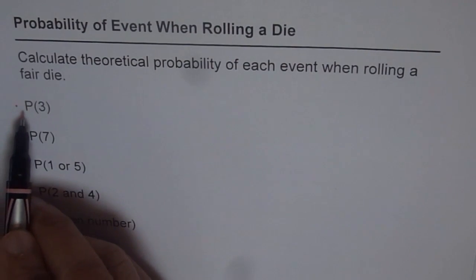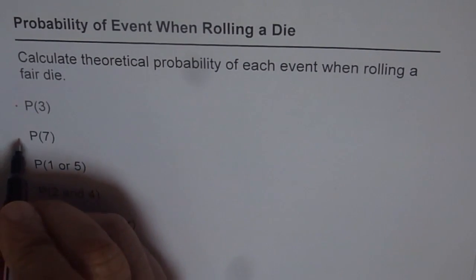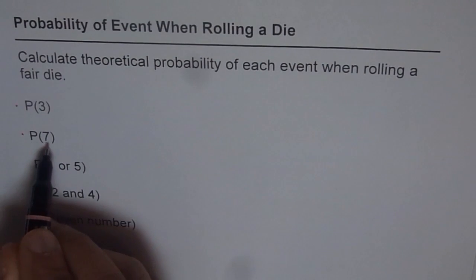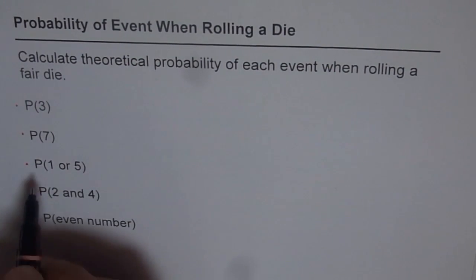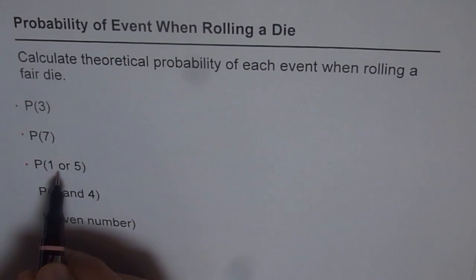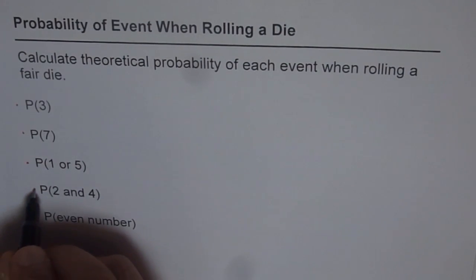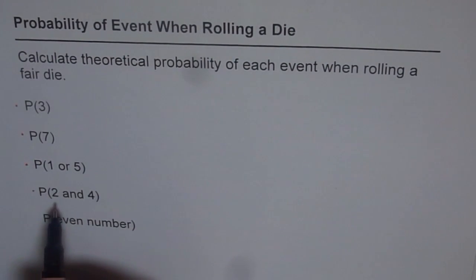That means probability of rolling 3, probability of rolling 7, probability of rolling 1 or 5, and then we have probability of rolling 2 and 4. And then we have probability of rolling even numbers. So we need to find all these probabilities one by one.